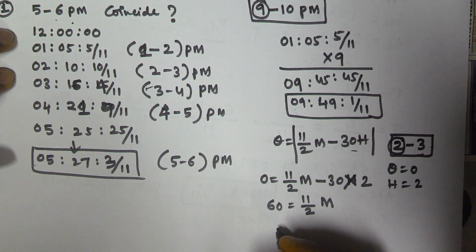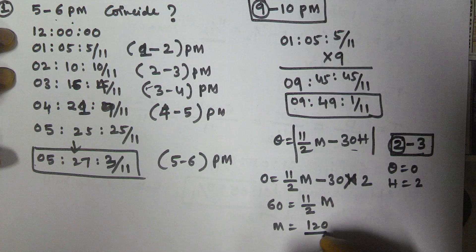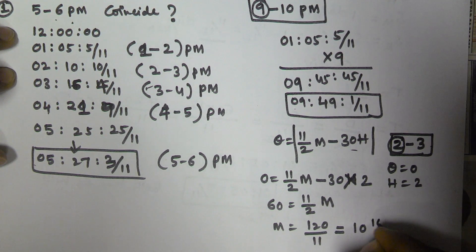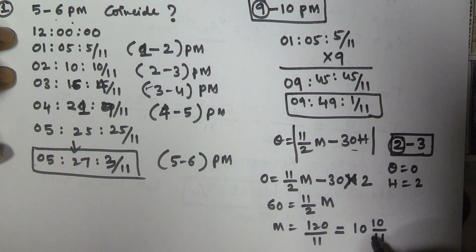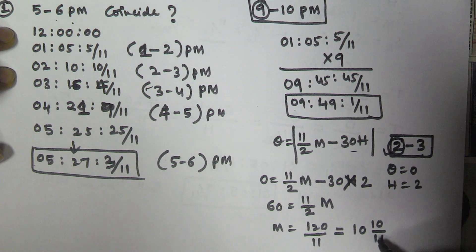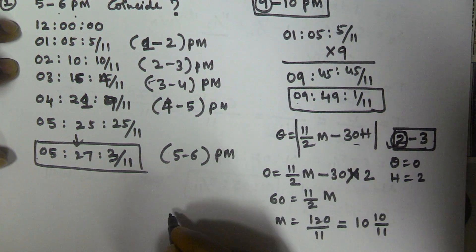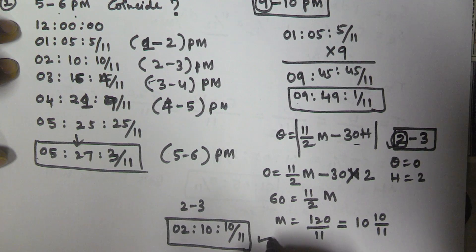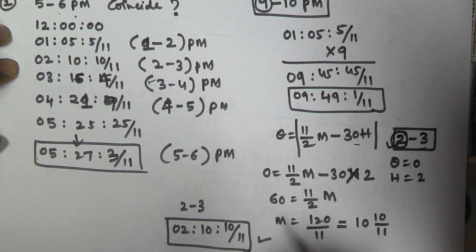Solving for m: m = 120/11 = 10 and 10/11. So the minutes value is 10 10/11. Therefore, after 2 hours 10 minutes 10/11 seconds both hands will coincide between 2 to 3 PM. I hope you understand this problem — thank you very much for watching, please subscribe to my channel.